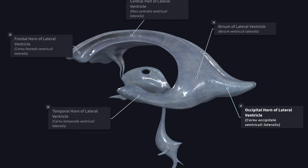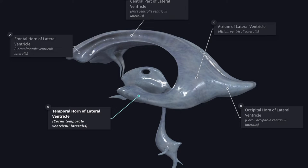The posterior horn or occipital horn is a backward extension from the central part into the occipital lobe towards the occipital pole. The inferior horn or temporal horn is a direct continuation of the main ventricular cavity into the temporal lobe and is the largest of the three horns. It begins where the central part and the posterior horn meet and curves around the pulvinar of the thalamus into the temporal lobe, ending about 2.5 centimeters behind the temporal pole. The posterior horn is the most recent in evolutionary terms among the three horns.